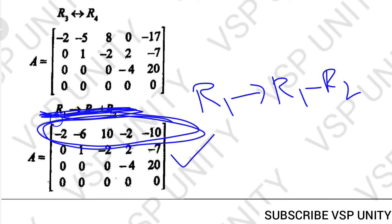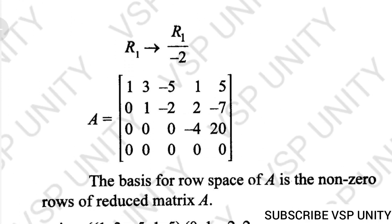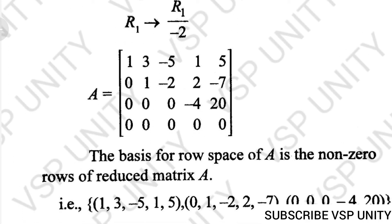If you observe here, R1 is entirely divisible by 2. So R1 changes to R1 by -2, then you will get this step. 1, 3, -5, 1, 5, 0, 1, -2, 2, -7, 0, 0, 0, -4, 20, all zeros. If you want to do further, these two terms will be divisible by 4. So if you want to do, you can do that also. R3 changes to R3 by -4, then it will be 1, -5.